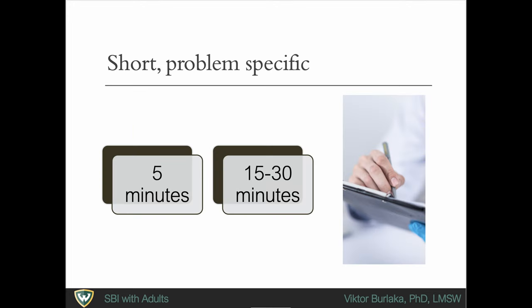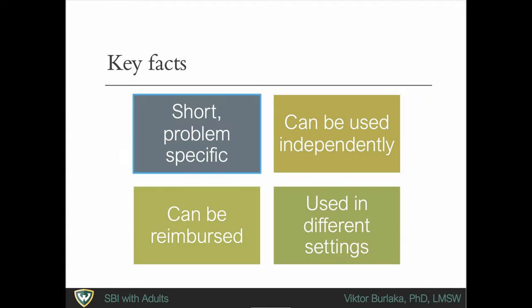Brief interventions in primary care can range from 5 minutes of brief advice to 15 to 30 minutes of brief counseling. These techniques are becoming more and more common in the treatment of substance abuse problems. Clinicians can increase positive outcomes by using this approach independently, either as standalone interventions or treatments, or as additions to other forms of substance abuse and mental health treatment.